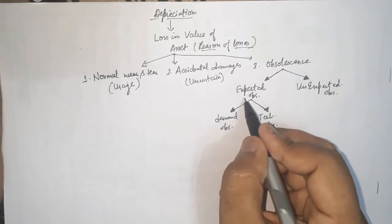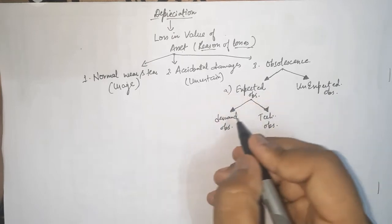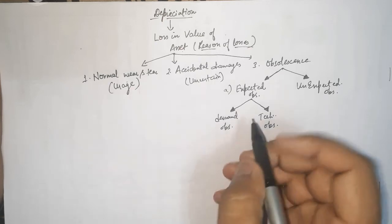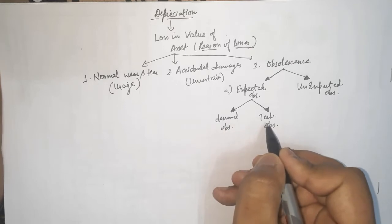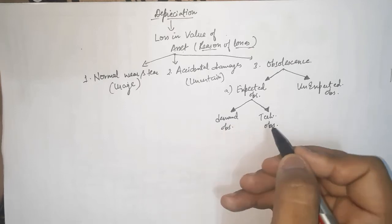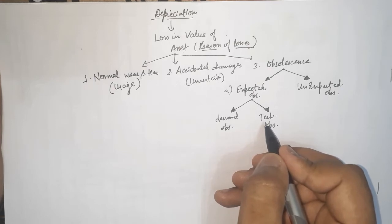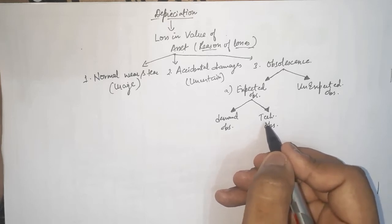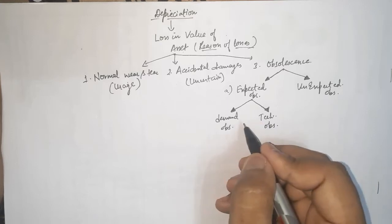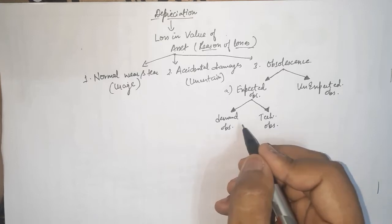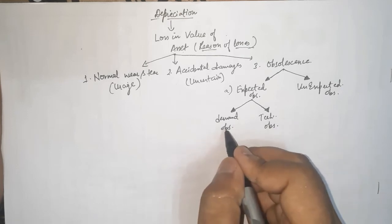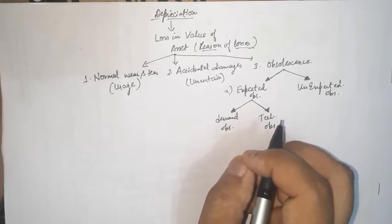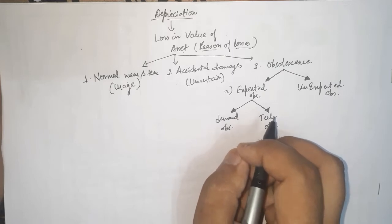There are two types of obsolescence. First is expected obsolescence, meaning you know this kind of obsolescence will come when you use any machine or technology. There are two types: demand obsolescence and tech obsolescence. Technology obsolescence refers to the change in technology — a machine becomes outdated relative to others. Demand obsolescence occurs when the demand for a commodity changes, making the machine that produced it also obsolete.